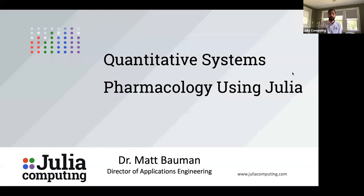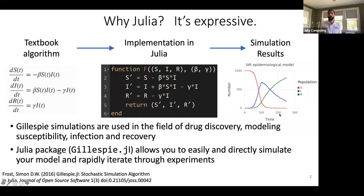To start the discussion today, I think it's nice to talk a little bit about why Julia — why this new language? Why is it a compelling answer, particularly in QSP? One great answer is that it's an expressive language — almost like pseudocode for math. You can take a textbook algorithm, match it with its implementation in Julia very nicely, including nice Unicode characters to match the literature, and it's pretty straightforward to code up a differential equations model.